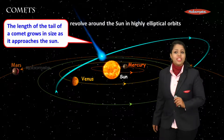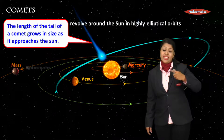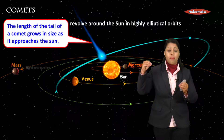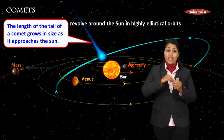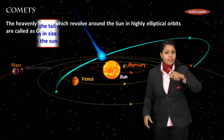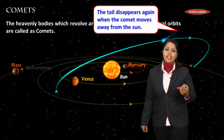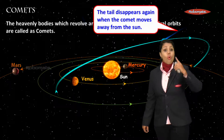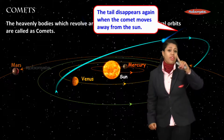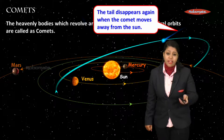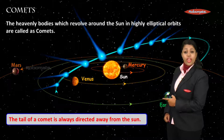The length of the tail of the comet grows in size as it approaches the Sun. When a comet is near the Sun, its tail keeps increasing because the comet evaporates, making the tail bigger and bigger. When the comet moves away from the Sun, the tail disappears again and goes on decreasing.